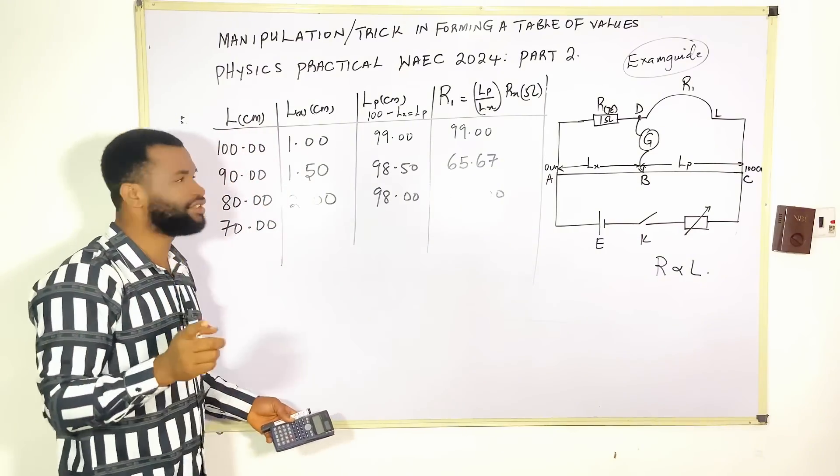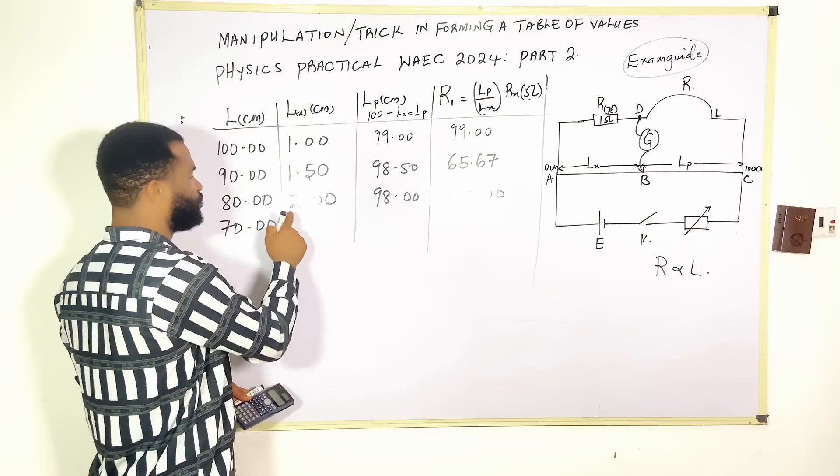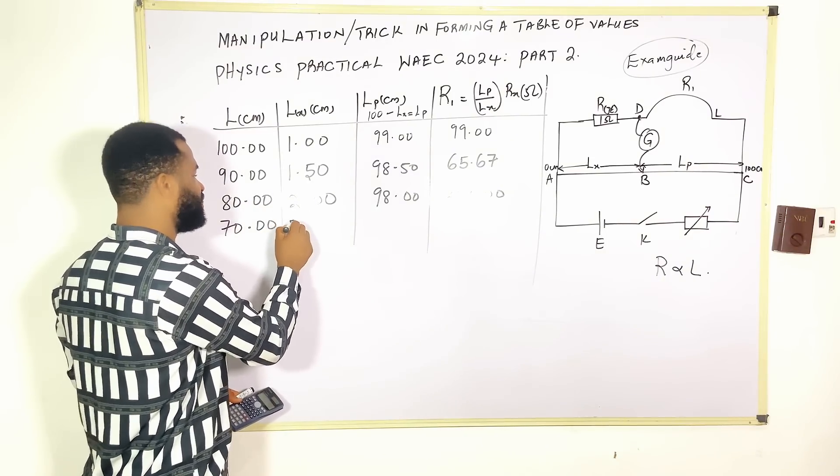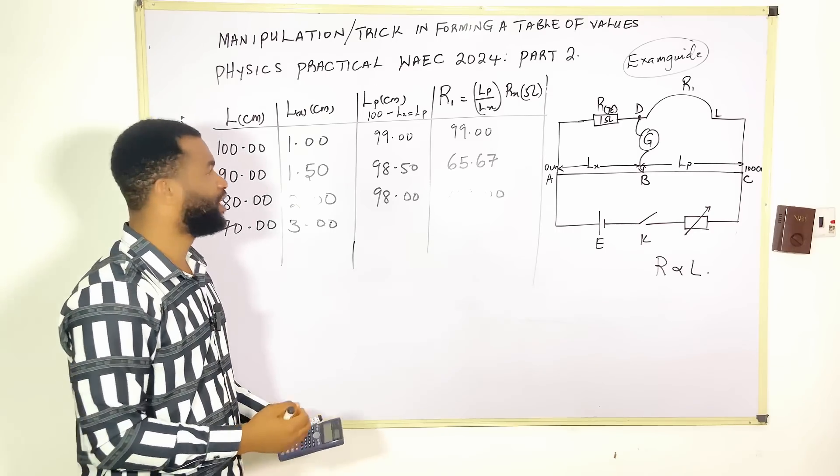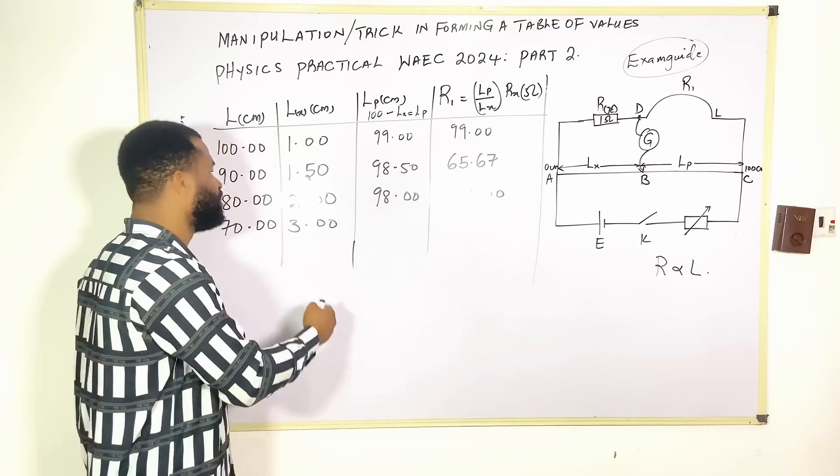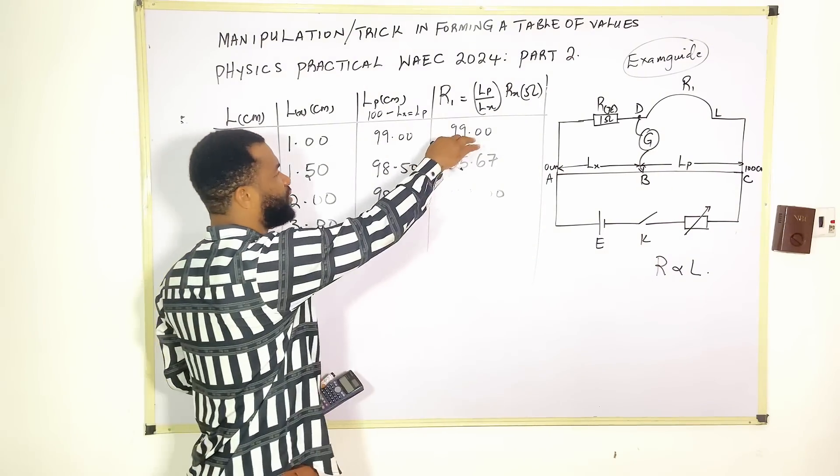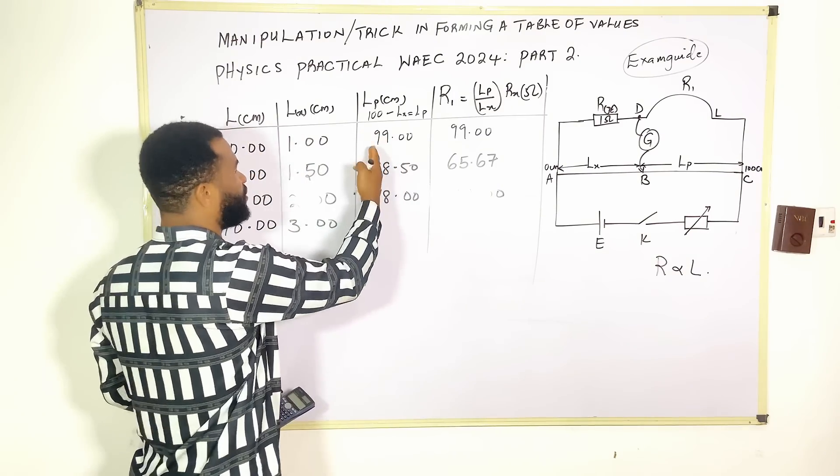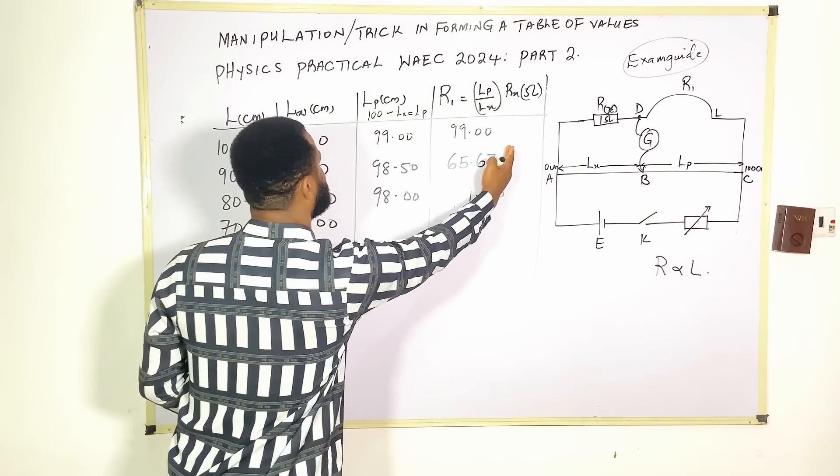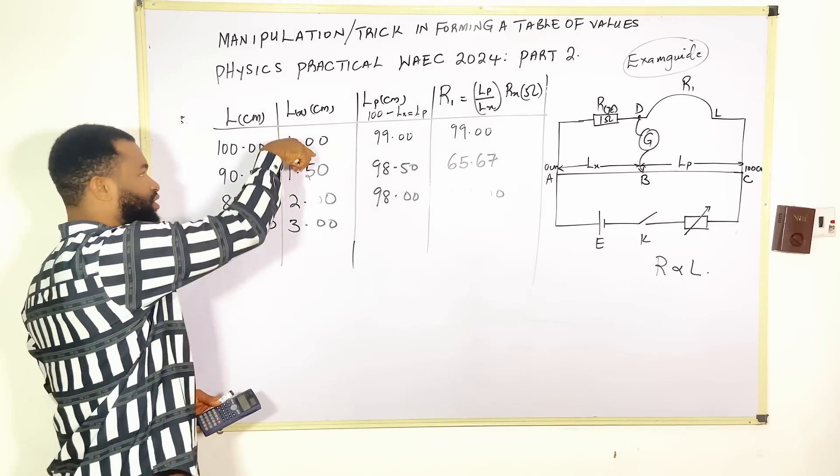The next thing is you could have 2.5, but let me just say 3.00, because in practical, everything cannot be perfectly done. Provided these values are increasing, you are good to go. These values are reducing. This value is reducing because this value and this value must reduce, as well as this value. But this is the only value that is permitted to increase if this is what the question work is going to require.